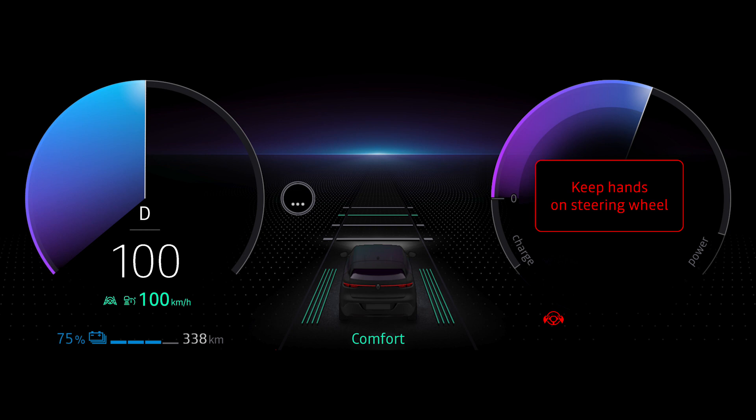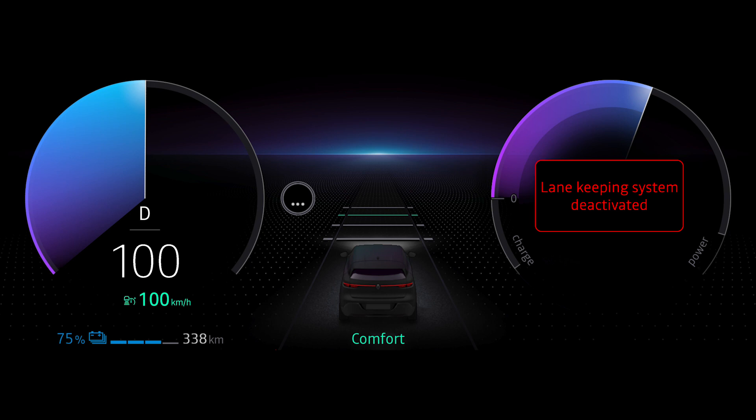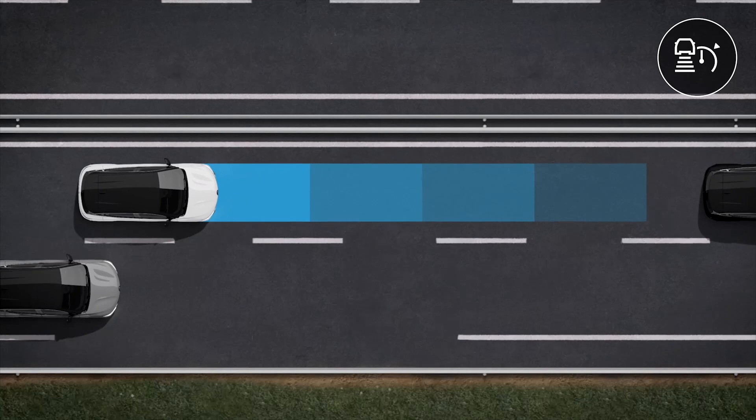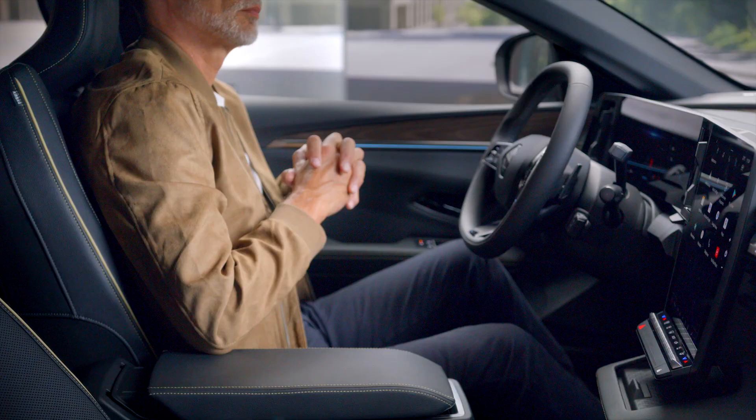After 45 seconds, all audio sources are put on standby and the audible warning is continuous. The indicator light goes out and the message 'Lane Keeping System Deactivated' appears in red on the instrument panel, and Lane Centering Assist is switched off. Please note that in this case, the stop-and-go adaptive cruise control continues to operate.